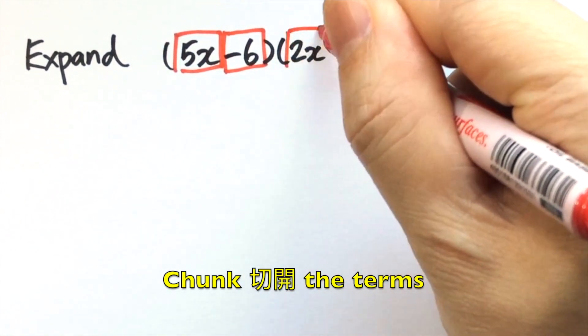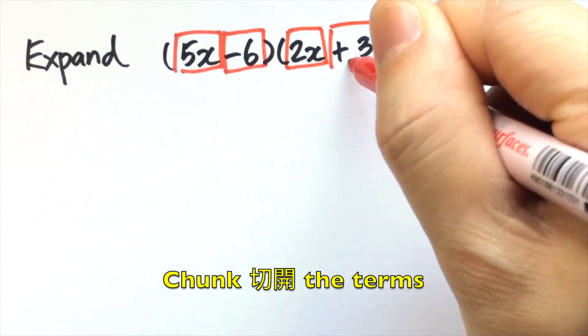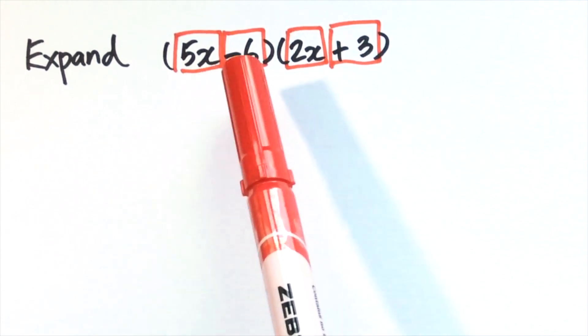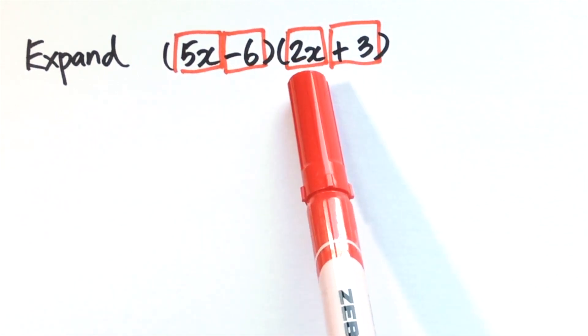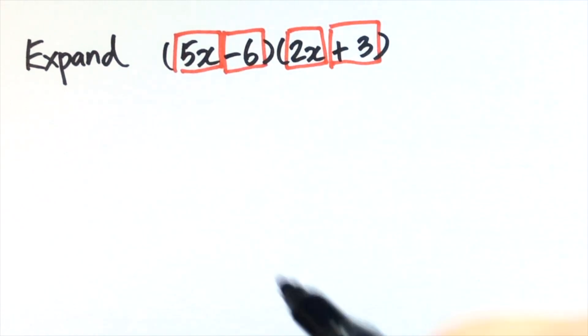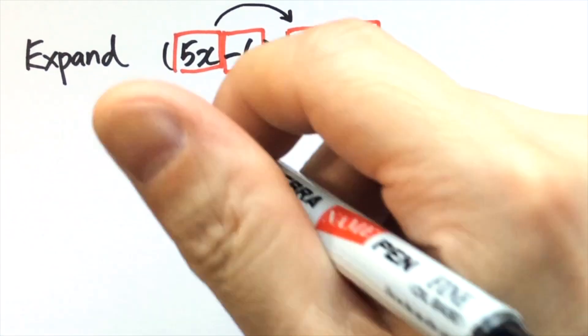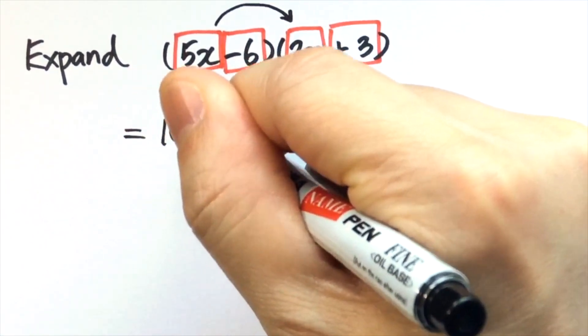Split the binomials into four terms: 5x is the first term, negative 6 is the second one, 2x is the third one, and the last one is plus 3. Now we can do the distributive law. 5x times 2x gives 10x squared.